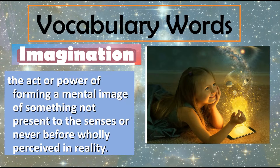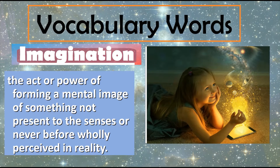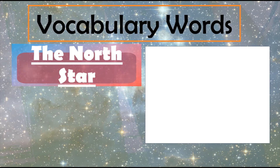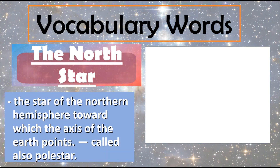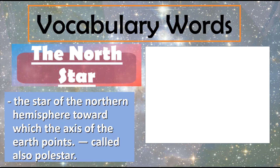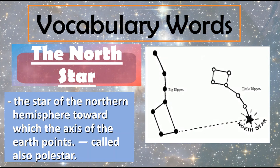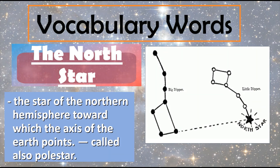Like you can see in the picture, the little girl is playing with stars and planets — that is just an imagination. The North Star is the star of the Northern Hemisphere towards which the axis of the Earth points. It is also called the Pole Star. This is a very bright star, and since Thailand is in the Northern Hemisphere, we can see this North Star at night.